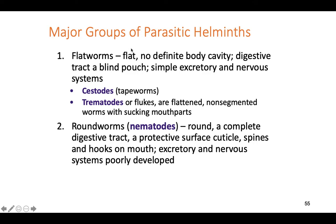There are two different groups: flatworms and roundworms. Flatworms are flat, with no definitive body cavity. Their digestive tract is a blind pouch — one hole for both mouth and anus — with a very simple excretory system and simplistic nervous system. Tapeworms, trematodes, and flukes fall in this group. Roundworms are more complex — they have a complete digestive tract with a separate mouth and anus, a protective surface cuticle that keeps them from being broken down in the body, and spines and hooks to hold on.